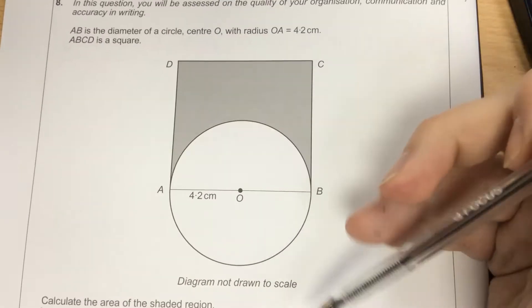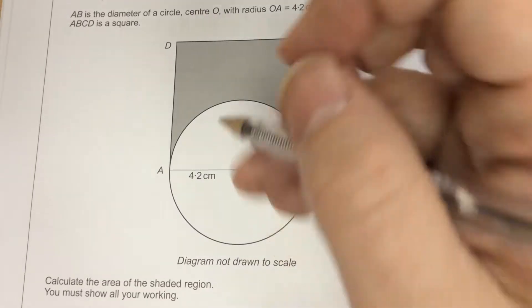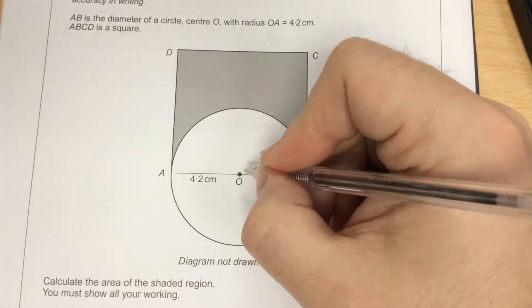AB is the diameter of a circle, centre O, with radius OA equal to 4.2 centimetres.